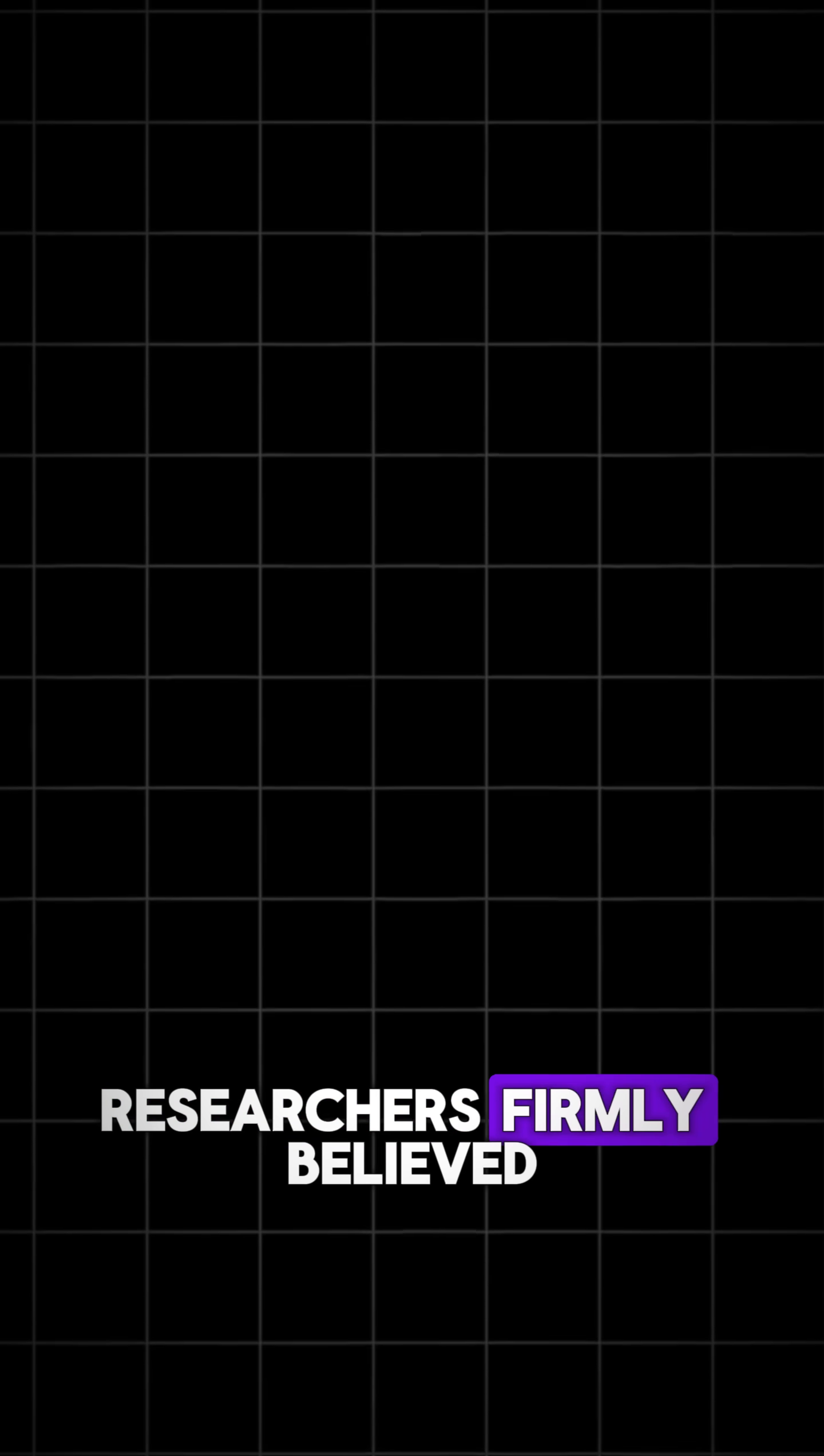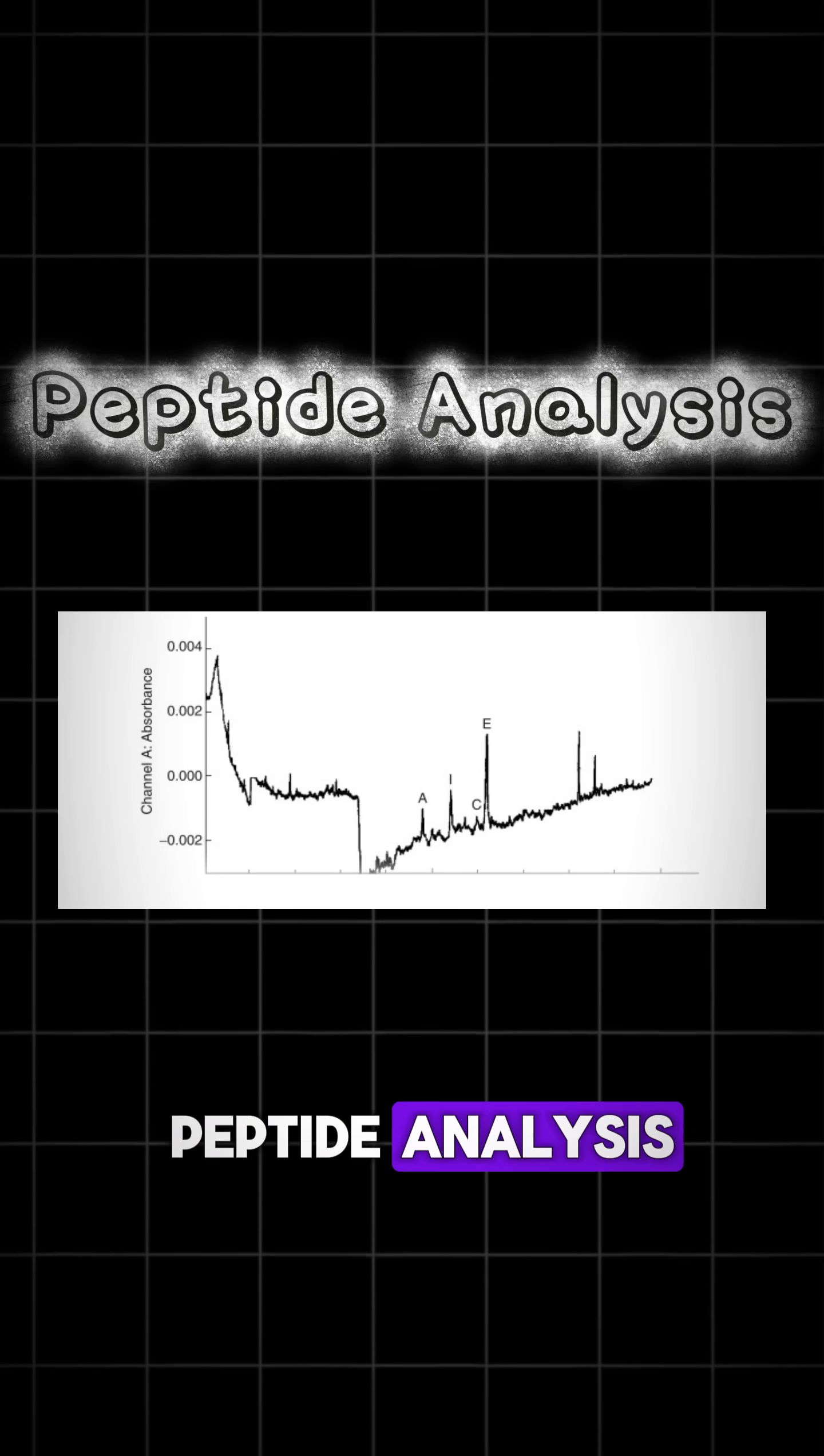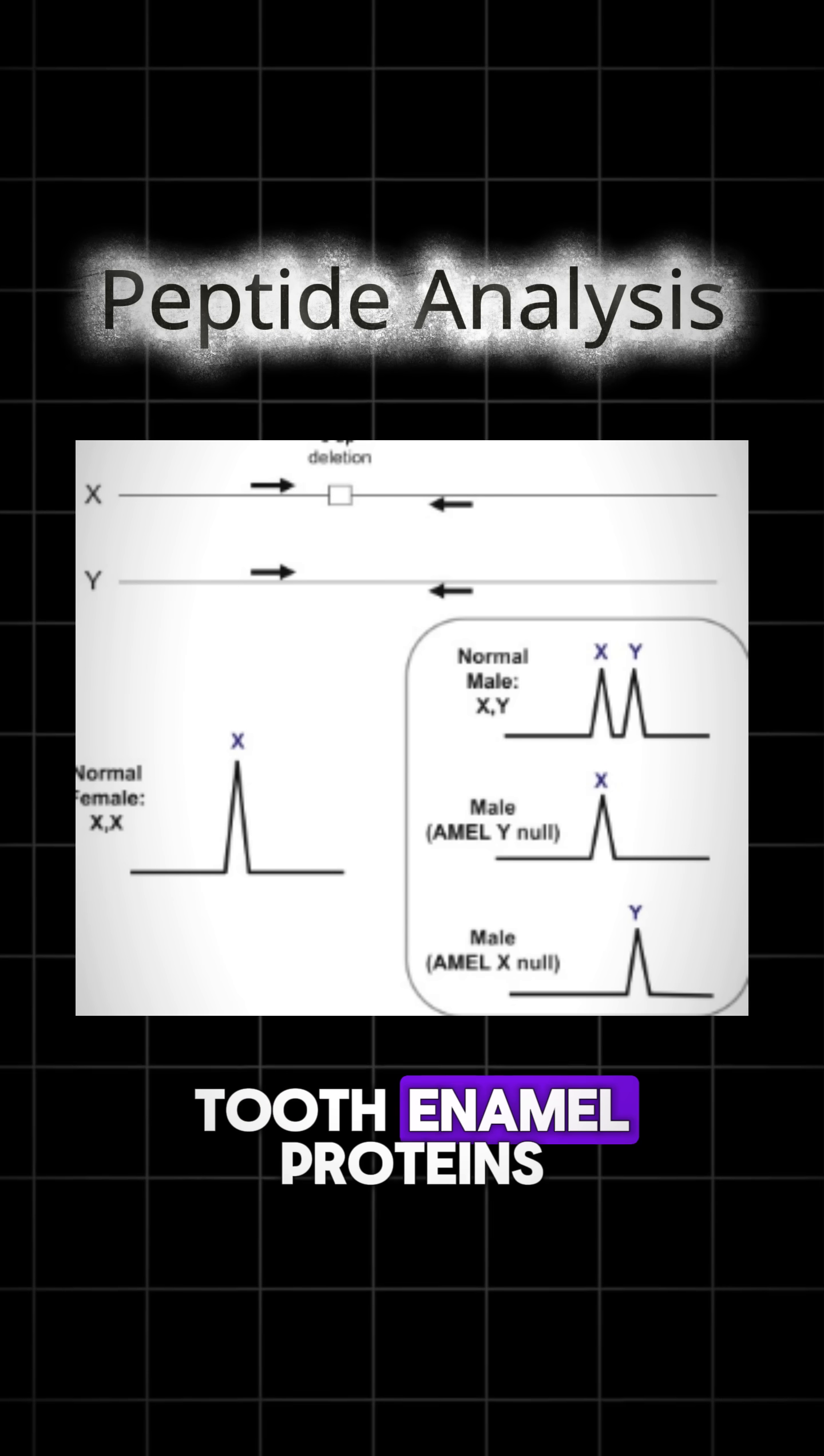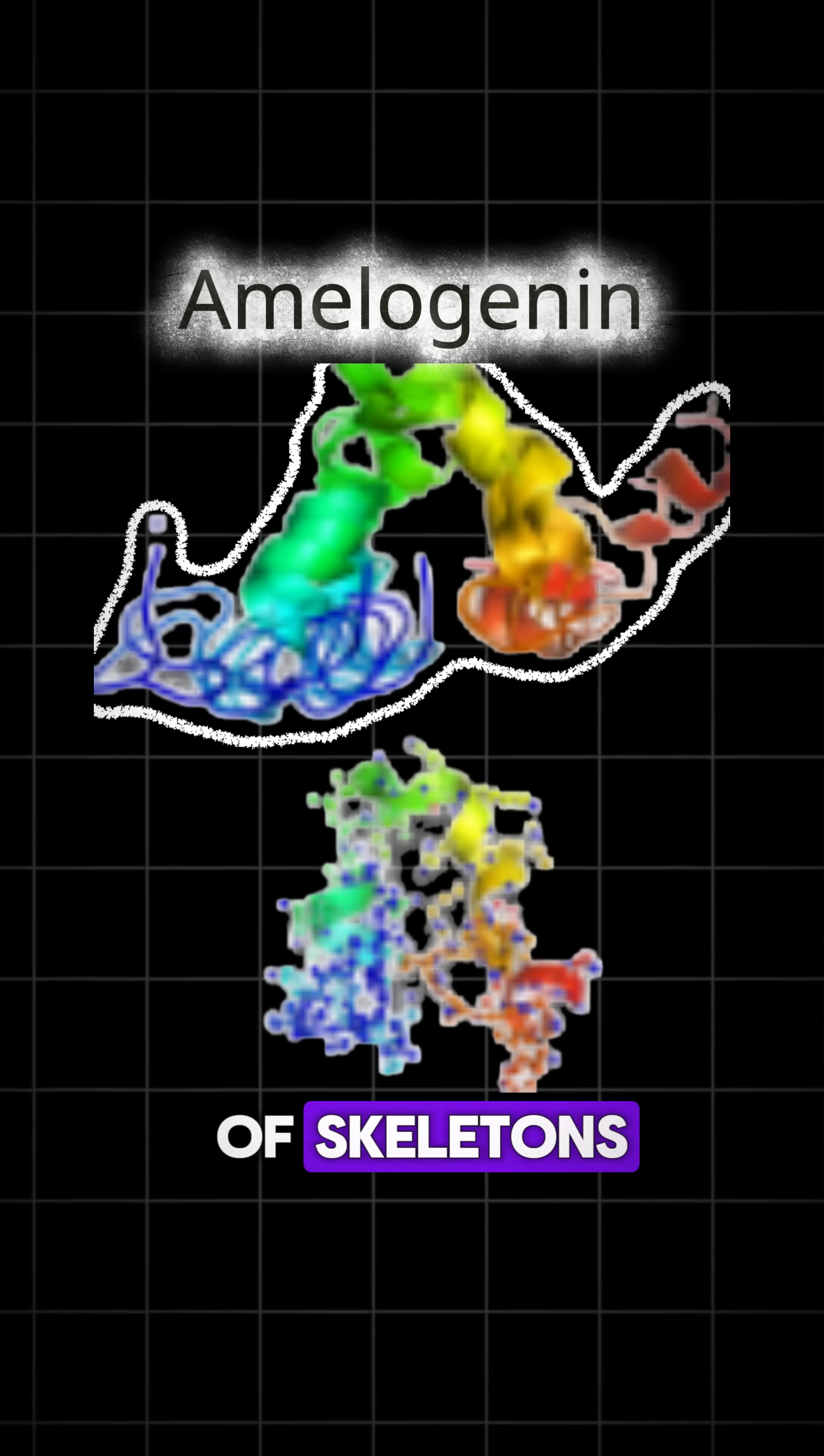Researchers firmly believed that the two were a heterosexual couple buried together, but recent research using peptide analysis conducted by University of Bologna confirmed that the two skeletons were in fact male. Peptide analysis uses the tooth enamel proteins, specifically amelogenin, which is sex-specific to determine the sexes of skeletons.